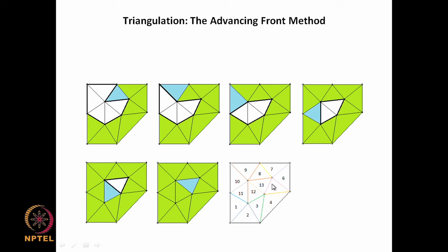We have created triangles making use of all nodes, starting with one edge and completing all nodes in sequence. The order in which triangles were created is 1, 2, 3, 4, 5, 6, 7, 8, 9, 10, 11, 12, 13. This is a very robust method, especially for its desirable feature that we are always looking at inward points, so that points lying outside are never linked to form triangles.